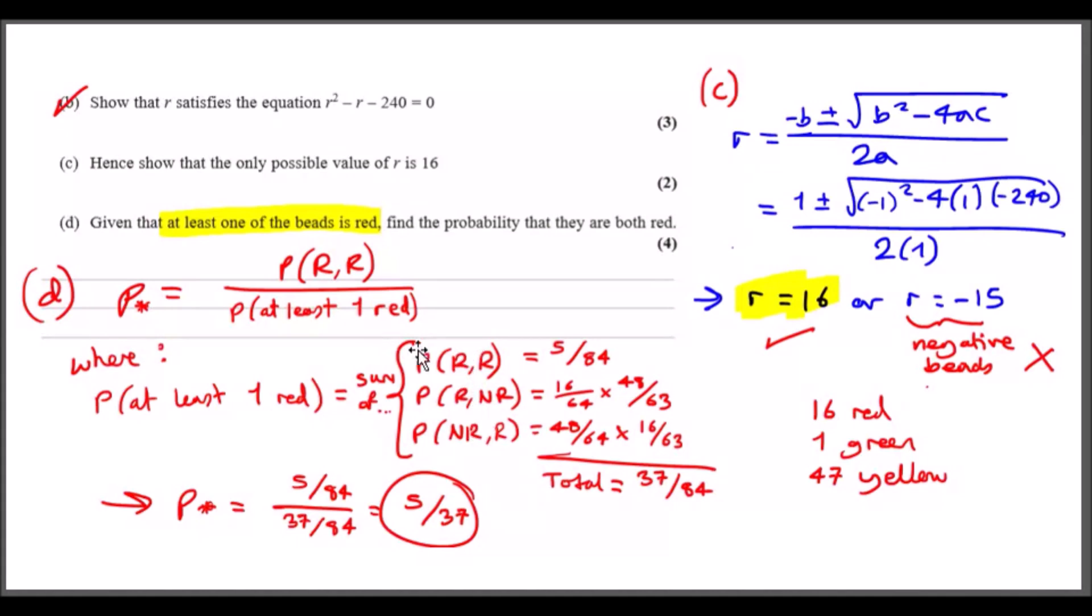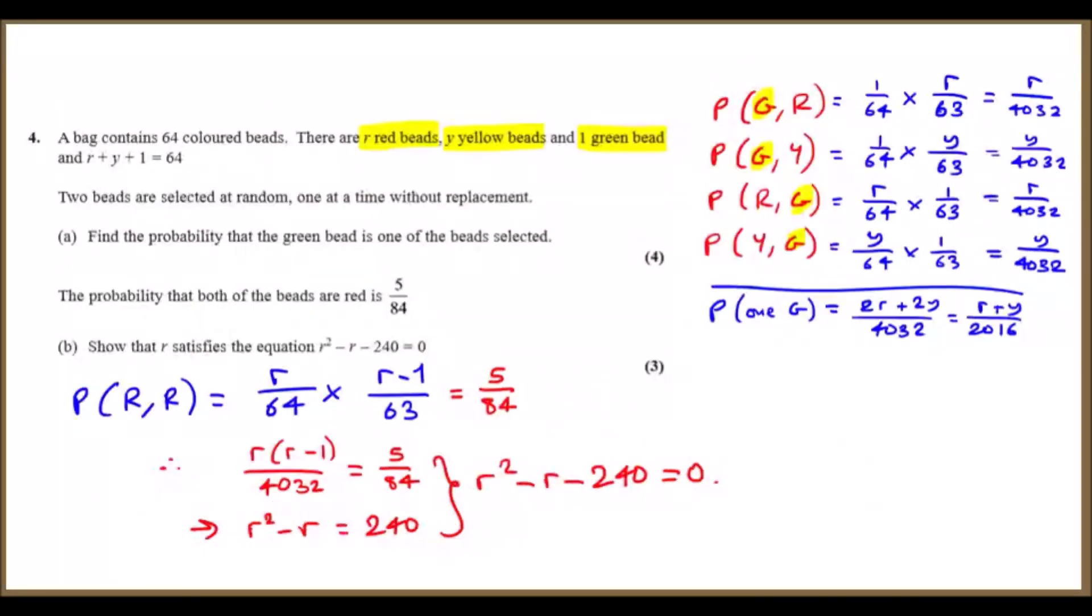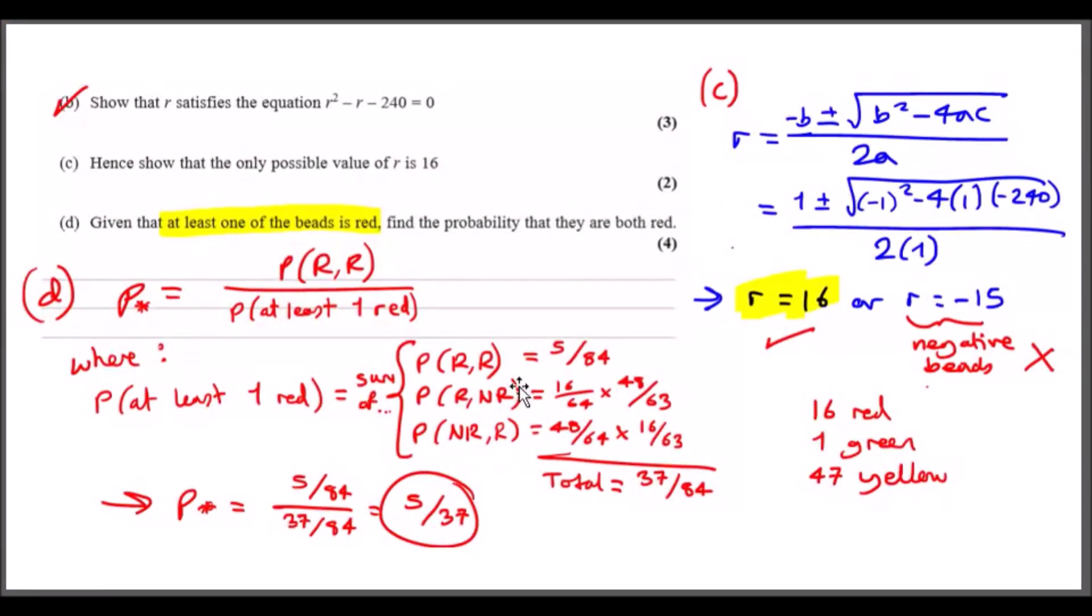To get red-red, we already have the answer 5/84 from part B. And to get red-not-red—forgot to mention one thing: because we know r is 16, we can solve the rest. That means you got 16 red, you have one green, therefore you have 47 yellow. This came from the original equation—it's going to be useful.